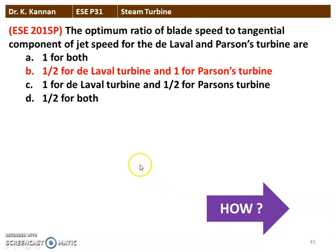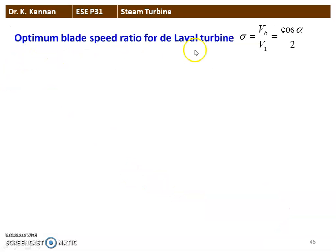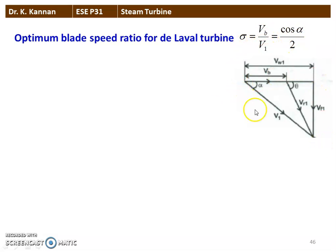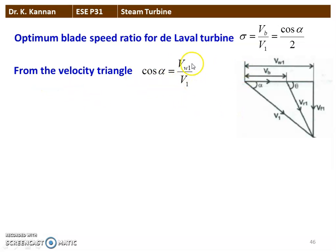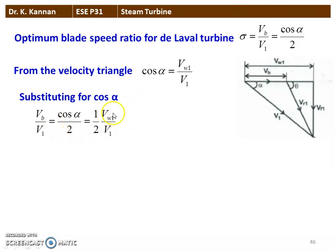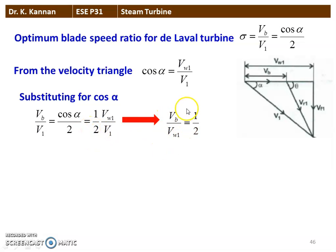We will see how in the next slide. Optimum blade speed ratio for De Laval turbine: σ = V_B / V1 = cos α / 2. From the inlet velocity triangle, cos α = V_W1 / V1. Comparing these two equations: V_B / V1 = cos α / 2. Substituting for cos α gives (1/2)(V_W1 / V1). Rearranging: V_B / V_W1 = 1/2 for the De Laval impulse turbine.